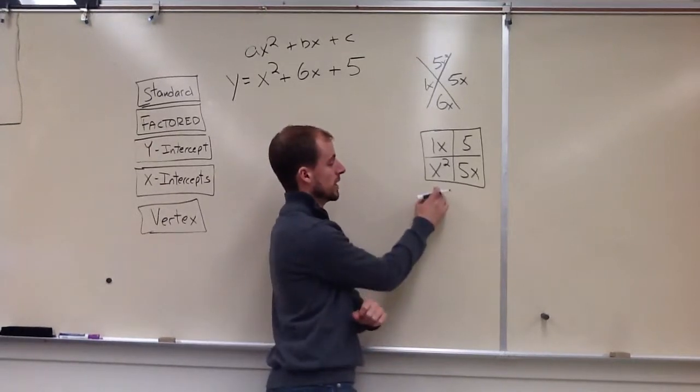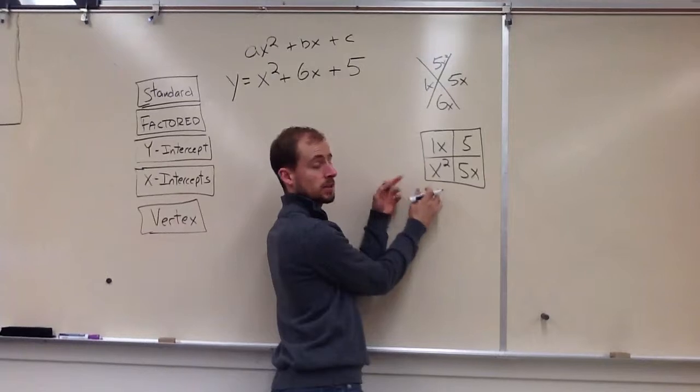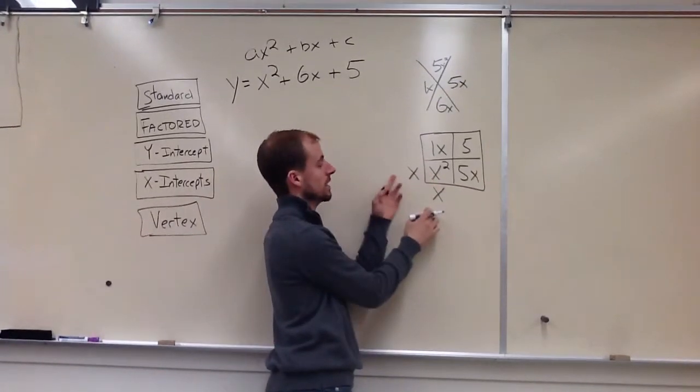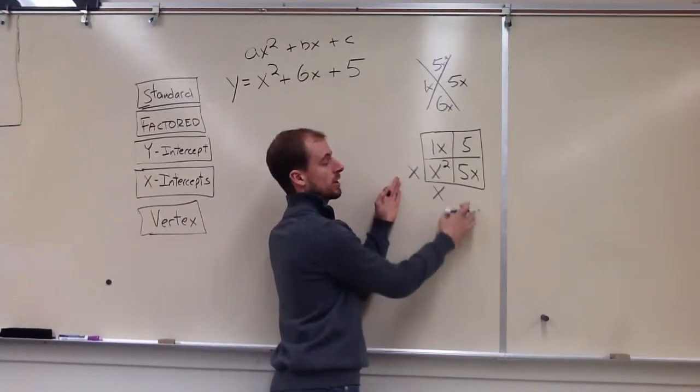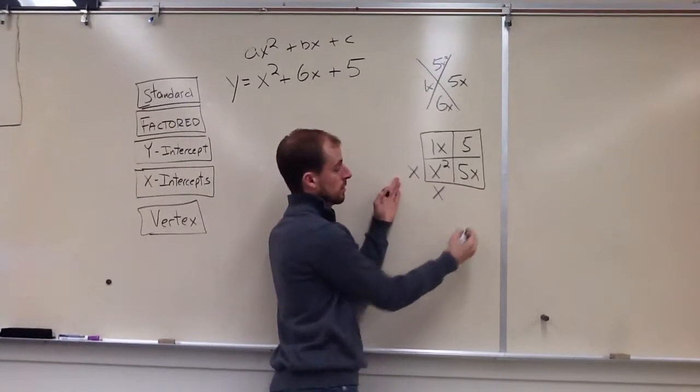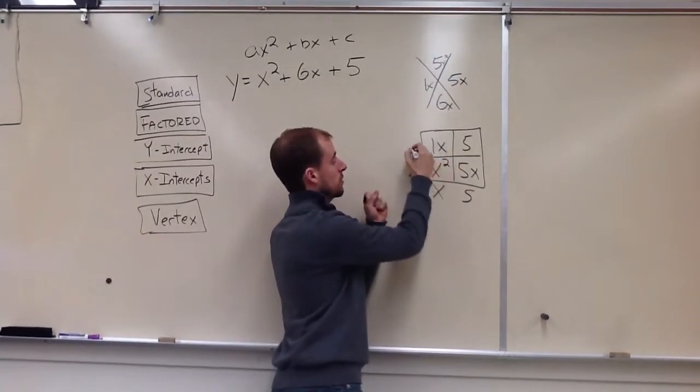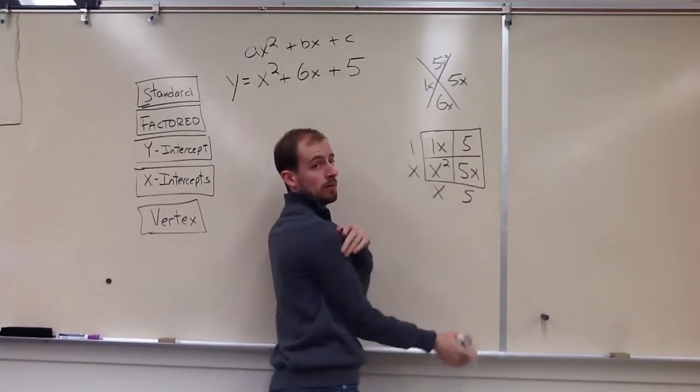And I need to figure out what goes here, here, here, and here. So two things that multiply together to give me x squared. And that's going to be x and x, because x times x is x squared. Now I need to do x times something over here to give me 5x. It's going to be 5. x times something over here to give me 1x, which will be 1. And then you want to check to make sure 1 times 5 is 5, and it is.